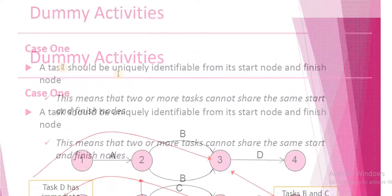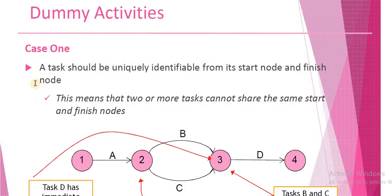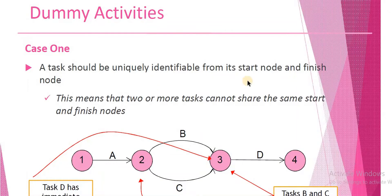So what was Case 1? This task was uniquely identifiable from the start node and the end node. This means that two or more tasks — in other words, multiple tasks — cannot share the same start and finish nodes.